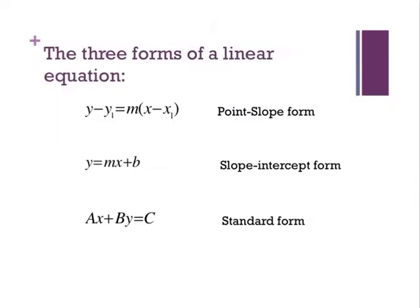There are three forms of the basic linear equation. You are already familiar with this one in the middle, slope-intercept form, where you know M is the slope and B is the y-intercept. So we've got that one taken care of. Check, we know this guy. Okay, let's look at these other two.